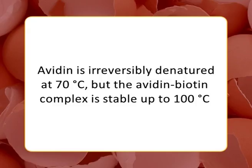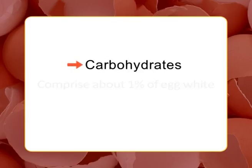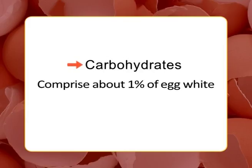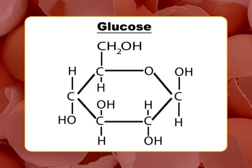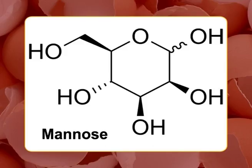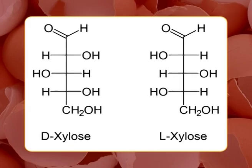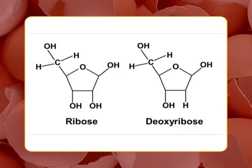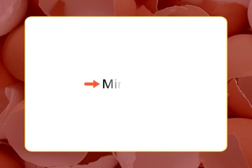Other constituents of egg white include lipids — the lipid content of egg white is negligible at 0.03 percent. Carbohydrates comprise about 1 percent of egg white, partly bound to protein (~0.5 percent) and partly free (~0.4 to 0.5 percent). Free carbohydrates include glucose (up to 98 percent), and mannose, galactose, arabinose, xylose, ribose, and deoxyribose totaling about 0.2 to 2 mg per 100 g of egg white. There are no free oligosaccharides or polysaccharides.